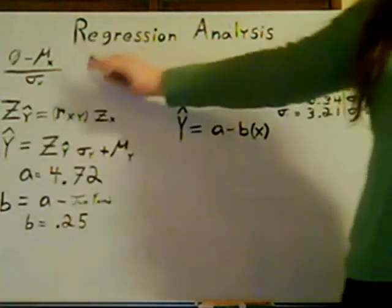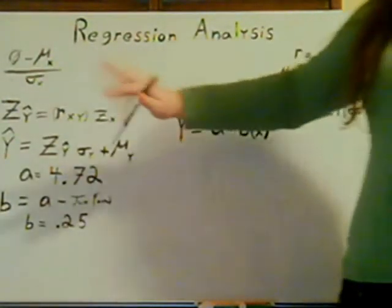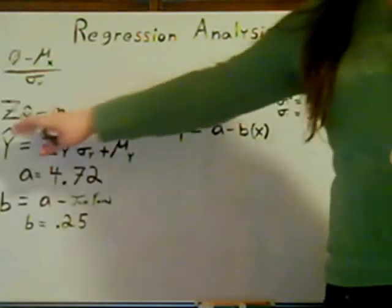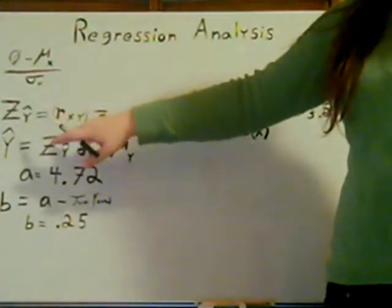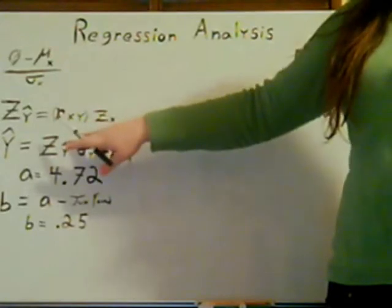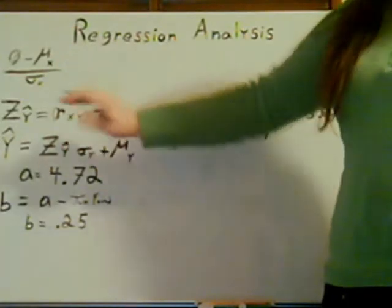And here, we're going to take that information we found, move down to the next formula. This is z of Y hat equals R of XY times z of X. Who do what now? Okay. Let's figure this out.